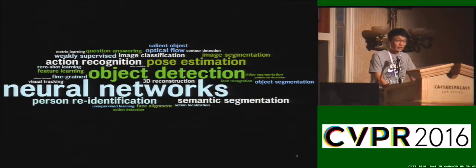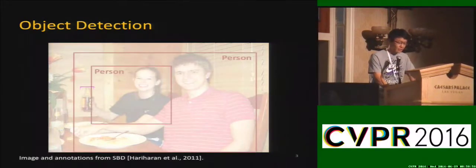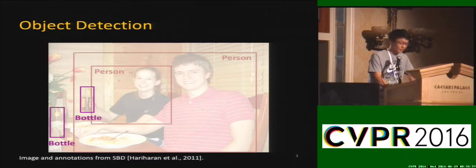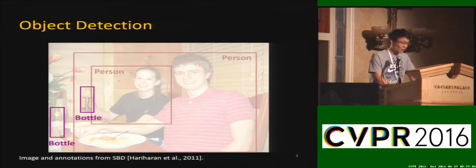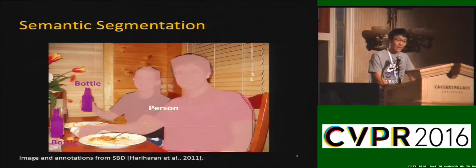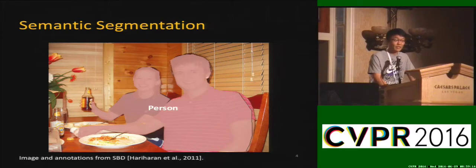Object detection and semantic segmentation are taken as important tasks and involve a lot of research. Object detection focuses on generating bounding boxes for each instance, but this representation could be insufficient. In this example, the man and the entire bottle are included in one box. For semantic segmentation, it predicts a more detailed mask at the pixel level, however it ignores the existence of single object instances — both persons are denoted by one connected area.